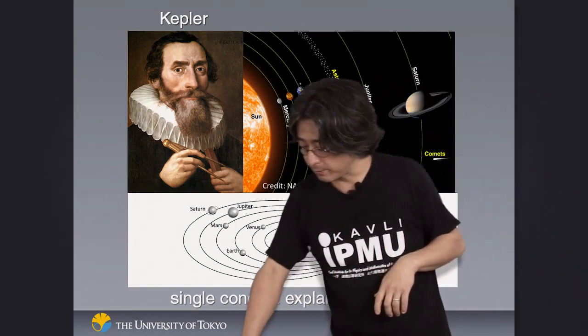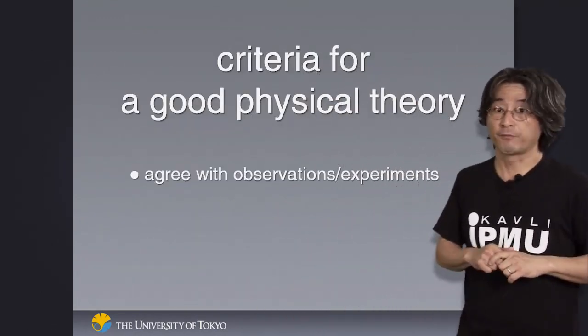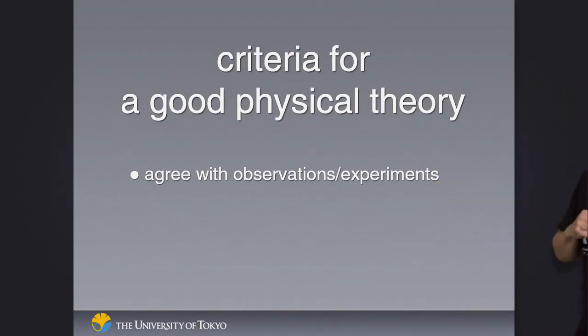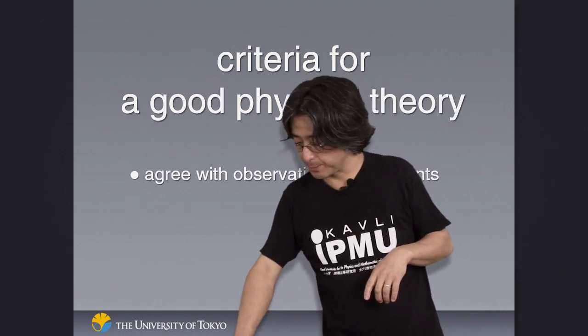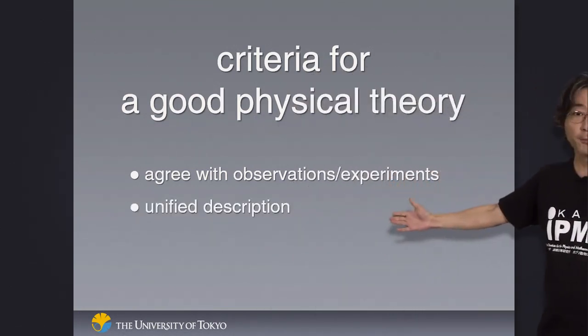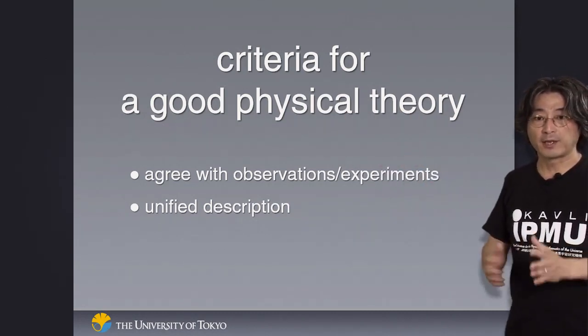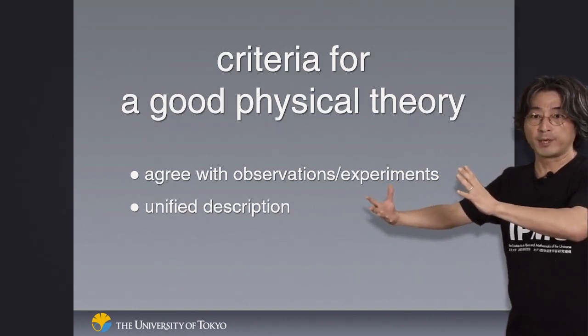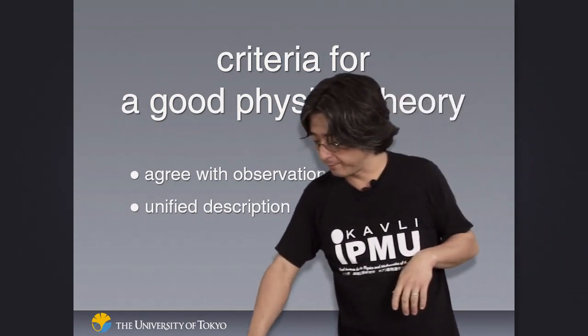Whenever we look for explanations behind phenomena, we apply these criteria for what we think is a good physical theory. First of all, if it doesn't agree with observation and experiments, the theory is dead. You just throw that away because it doesn't work. Theory has to agree with observations and experiments. But at the same time, we'll be much happier with a theory that applies to many things at the same time, a unified description. We don't want a single theory for Mars, another theory for Jupiter, a different theory for Saturn. We would like to have a single theory of this elliptical orbit that applies to all the planets we can study. That would be a criteria for a good physical theory.